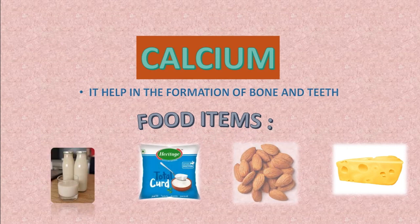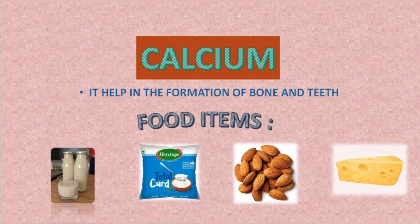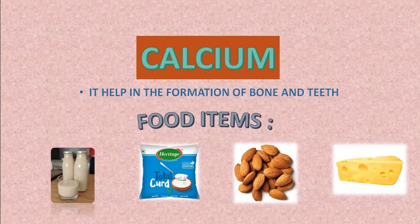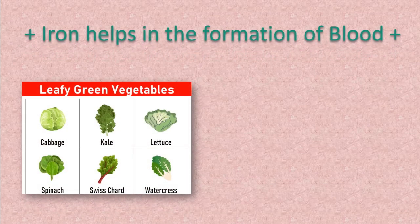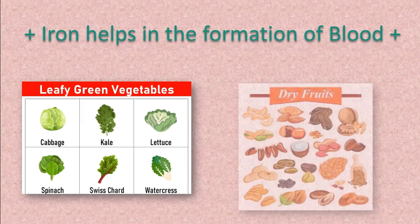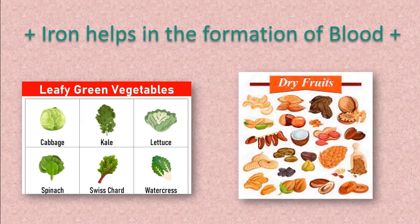Food items such as milk, curd, almonds and cheese are rich in calcium. The next mineral is iron — iron helps in the formation of blood. Green leafy vegetables and dry fruits are rich in iron.